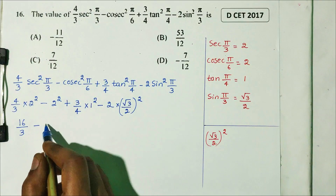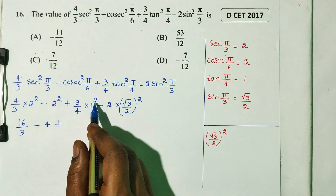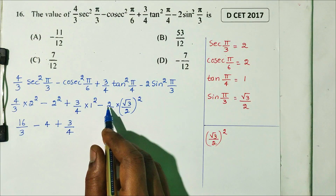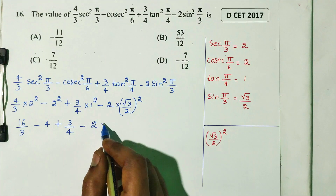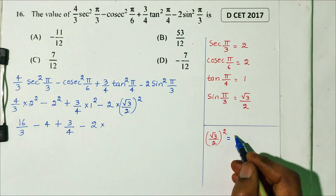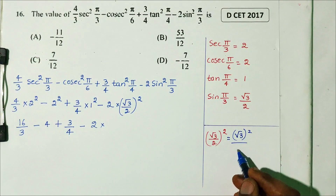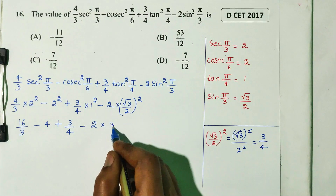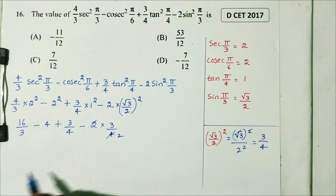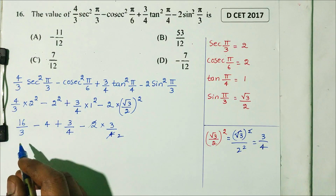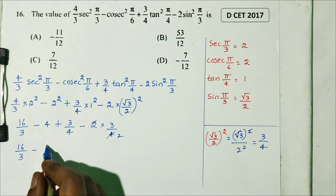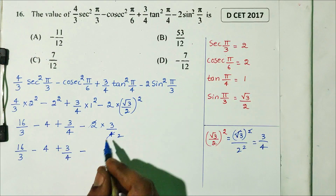Now substituting: (4/3)·4 minus (1)·4 plus (3/4)·1 minus (3/2). Simplifying: 16/3 minus 4 plus 3/4 minus 3/2. Now we find the LCM of 3, 4, and 2, which is 12.